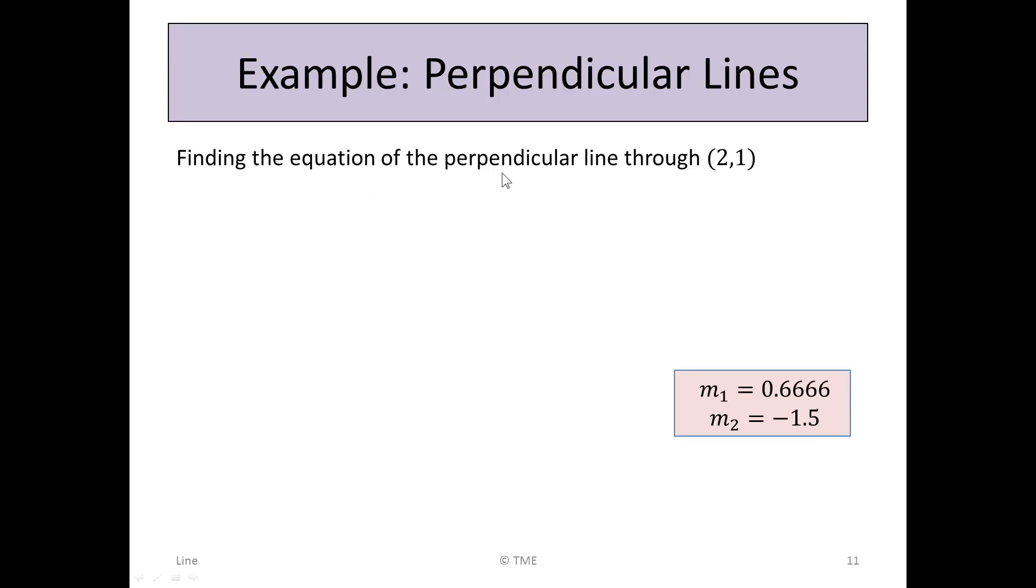Finding the equation of the perpendicular line through the point (2, 1), we use y - y₂ = m₂(x - x₂). We have the point (2, 1), which we'll call (x₂, y₂). Substituting: y - 1 = -1.5(x - 2).